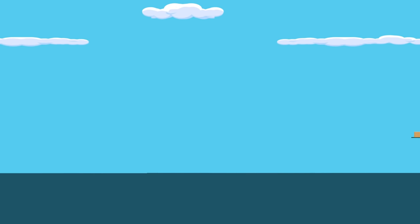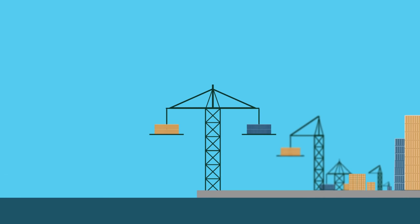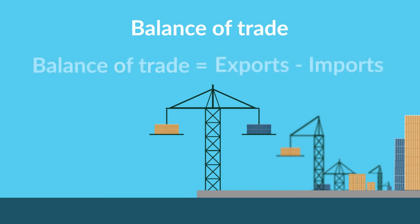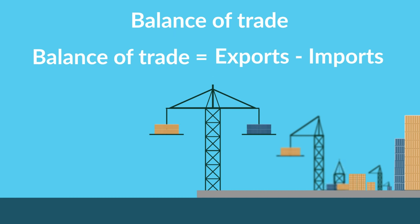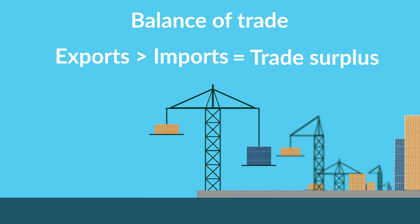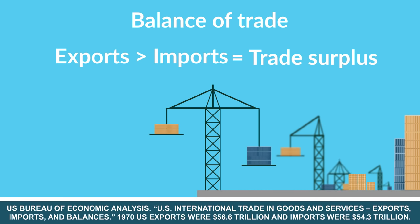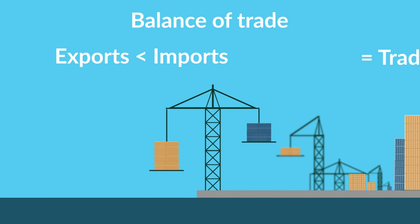Assessing a country's trade means examining the levels of both imports and exports. A common way of measuring trade is the balance of trade — a simple equation that subtracts the value of a country's imports from the value of its exports. If exports are greater than imports, the country has a trade surplus. Trade surpluses are uncommon for the United States; the last time the U.S. exported more than it imported was 1970. If the value of imports exceeds exports, the country has a trade deficit.